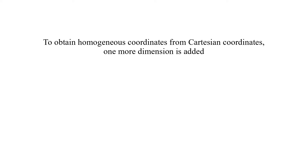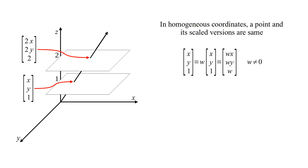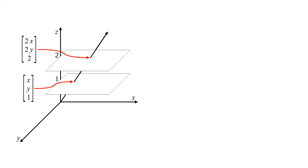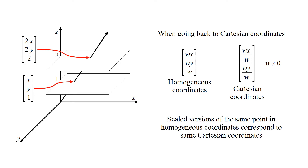To obtain homogeneous coordinates from Cartesian coordinates, one more dimension is added. In homogeneous coordinates, a point and its scaled versions are the same — they are the same point on different z-planes. If the z-component is zero, then the point is at infinity. When going back to Cartesian coordinates, x and y coordinates are divided by the z-coordinate. Scaled versions of the same point in homogeneous coordinates correspond to the same Cartesian coordinates.